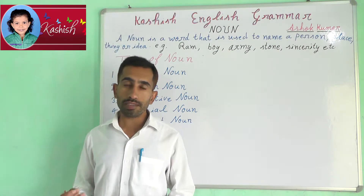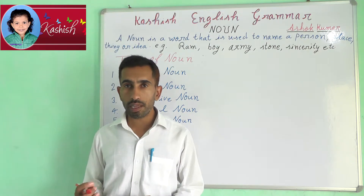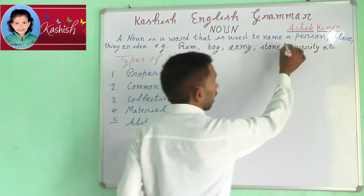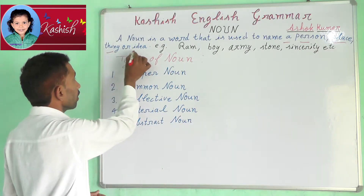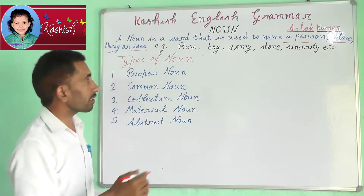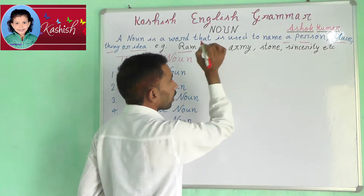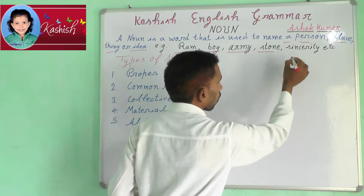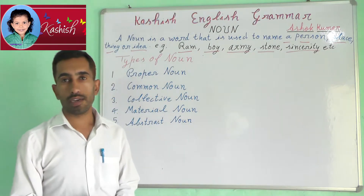What is a noun? A noun is a word that is used to name a person, place, thing or idea. For example, Ram, Boy, Army, Stone, Sincerity, etc.